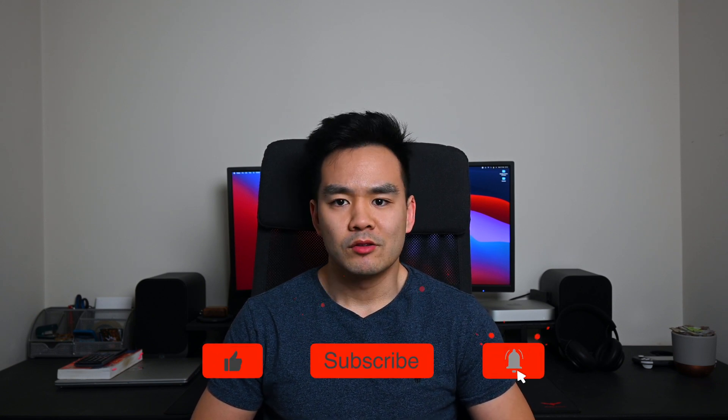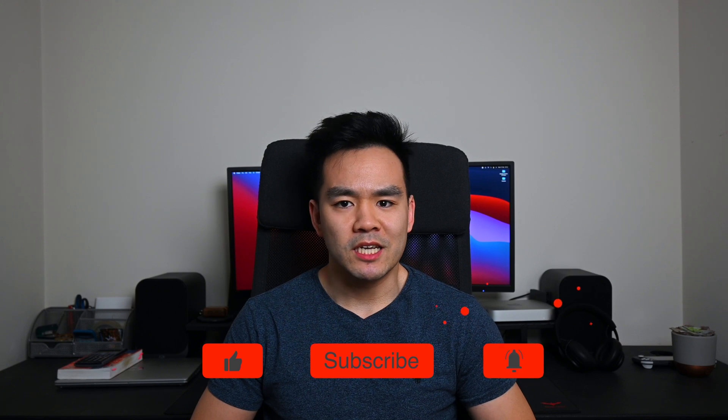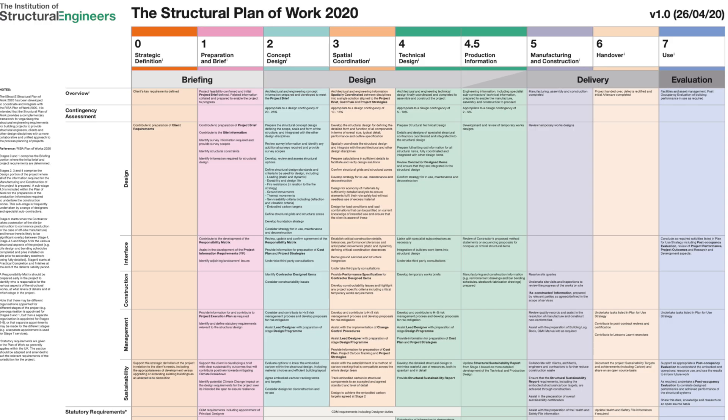Up until last year all the engineers were still using the architect's version of the RIBA stage plan. The problem with using it is that it wasn't very specific to what a structural engineer needs to produce at various stages, and this was kind of fixed when the iStructE published their RIBA stage plan, which is something I'll be roughly going through in this video.